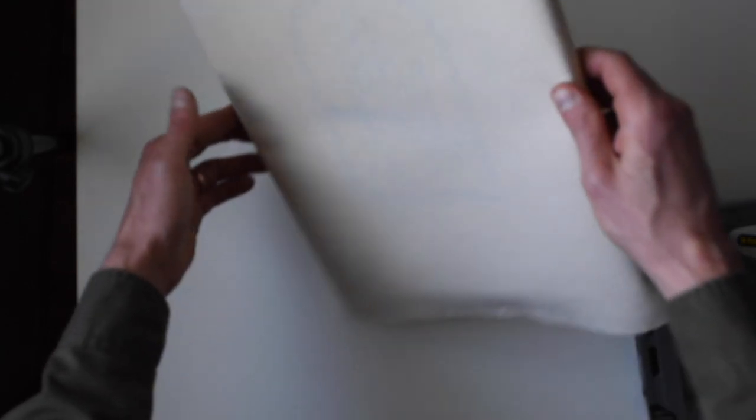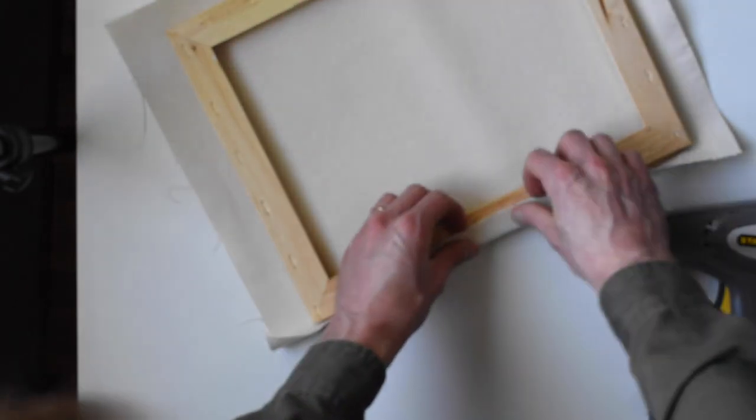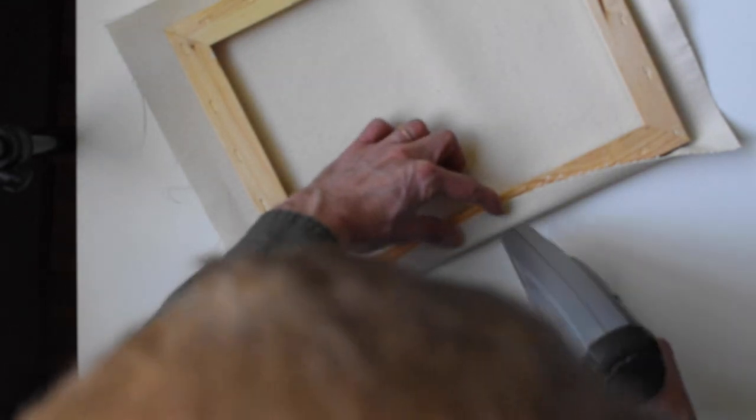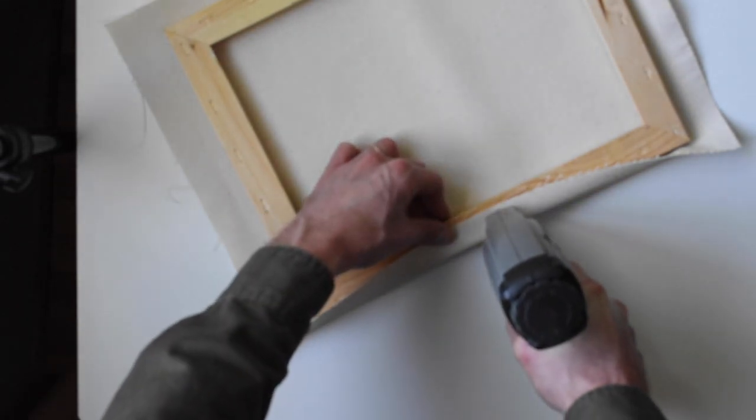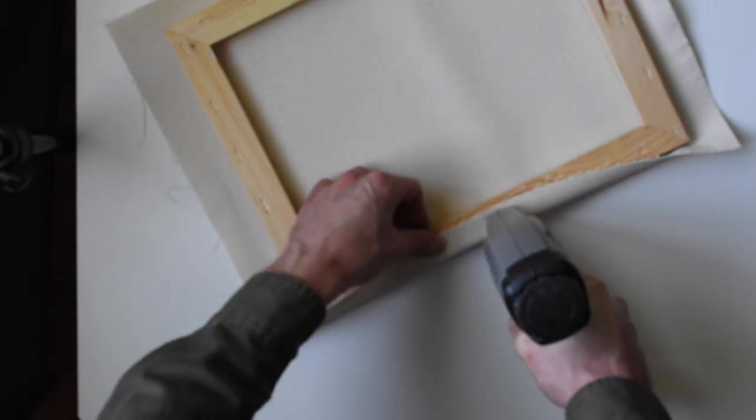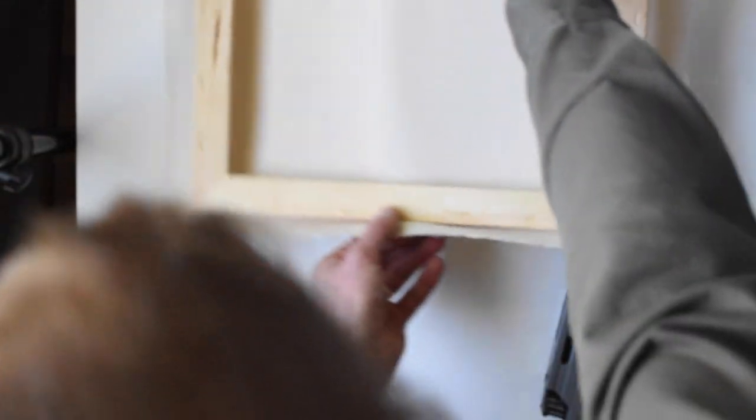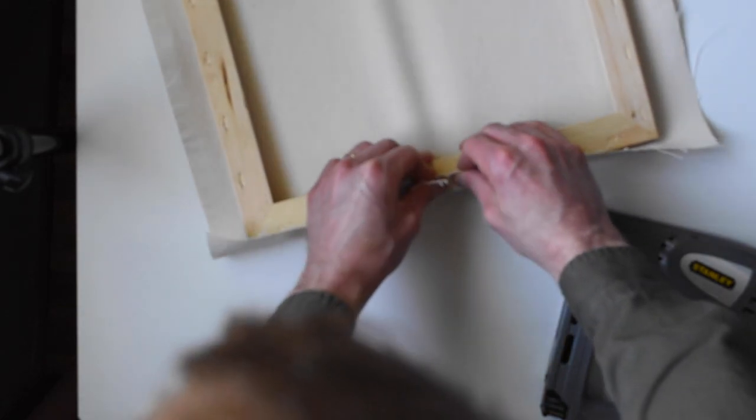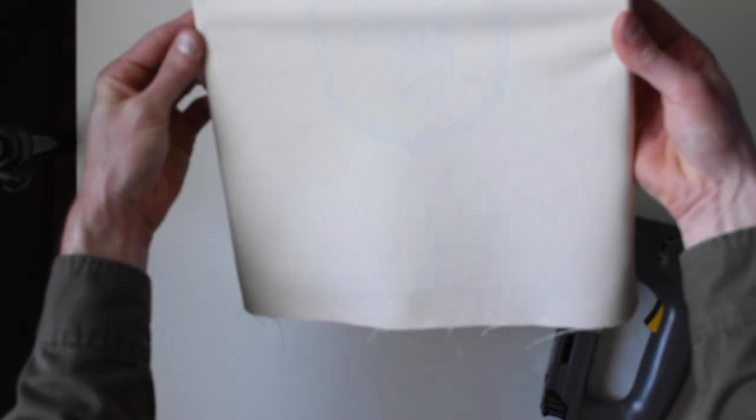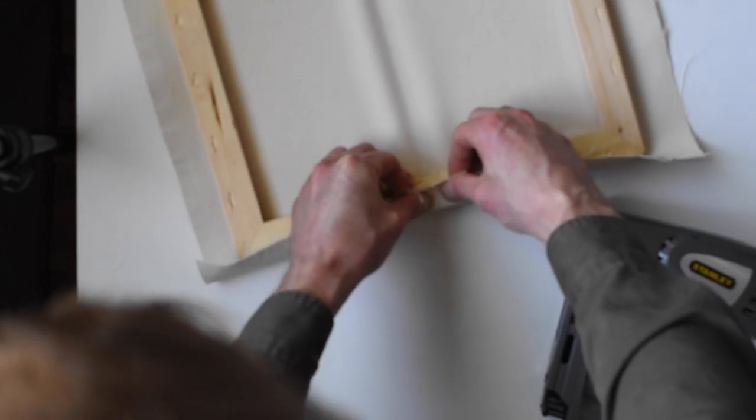All right, so here Brandon is checking to make sure that the design is centered. Once it is, he goes ahead and turns it around and starts stapling. Now you want to start at the center of both sides and then work your way out from there. So he is using an electric staple gun just that you can get at the hardware store. So with one staple in, he goes to staple directly across it on the other side. See how tightly he's pulling the canvas—you want it as tight as can be, to the point where you think maybe it's too tight, and then basically keep pulling.